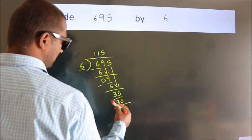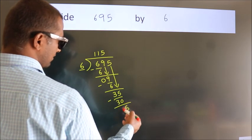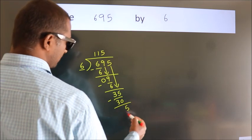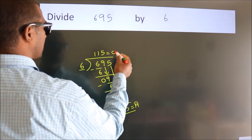Now we subtract, we get 5. After this, no more numbers to bring it down. So we stop here. This is our remainder. This is our quotient.